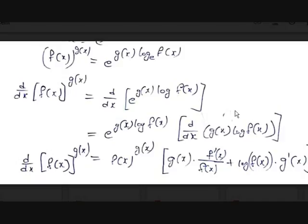For d/dx of g(x)·log f(x), we use the product rule: d/dx(u·v) = u'v + v'u. So we get g(x) times the derivative of log f(x). By chain rule, d/dx of log f(x) = 1/f(x)·f'(x). Plus the second term: log f(x) times the derivative of g(x), which is g'(x).